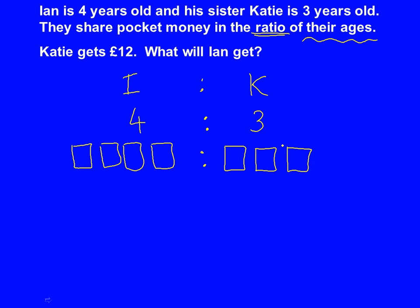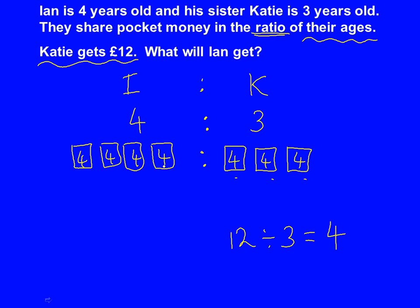Then we read the question — it tells us that Katie gets 12 pounds, so 12 pounds is shared by Katie's boxes. Katie has 3 boxes, so 12 shared by 3 is 4, meaning 4 goes in each box. We want to know what Ian has: Ian has 4 boxes, and when you add them up you get 16. So Ian gets 16 pounds, which is our answer.